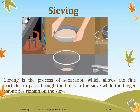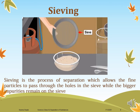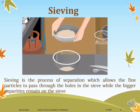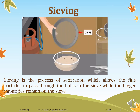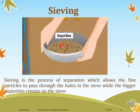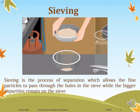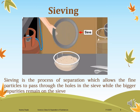Sieving. Sieving is the process of separation which allows fine particles to pass through the holes in the sieve while the bigger impurities remain on the sieve. Sieving is a very common example we can see in our homes. While preparing wheat dough, we need to clean the wheat flour, and for this we use the mechanism of sieving — we put the wheat flour on the sieve, the impurities stay back on the sieve, and the fine particles pass through the holes.